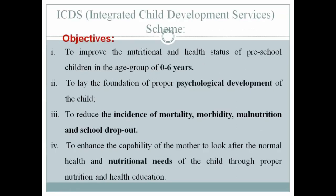ICDS (Integrated Child Development Services) is a program to improve children's nutritional status, focusing on zero to six years for psychological development. It aims to reduce mortality, morbidity, malnutrition, and school dropout. The government provides nutrients like milk, eggs, and cereals so that children from poor families receive adequate nutrition, helping address malnutrition.